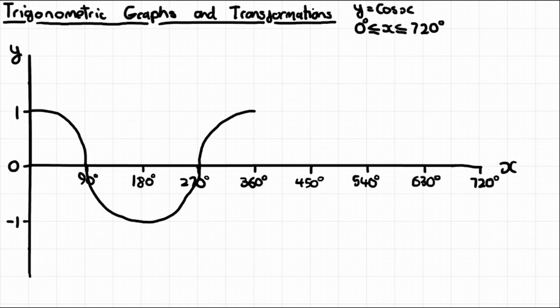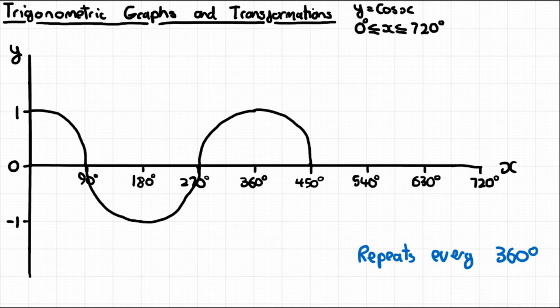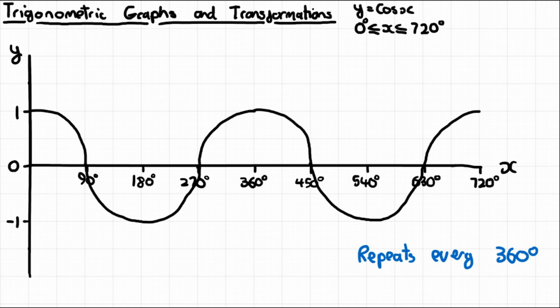Like the sin graph, the cos graph repeats every 360 degrees, which makes it easy to extend — you just need to remember the 0 to 360 portion and copy-paste. It goes down from 1 to 450, down to -1 at 540, back up to 0 at 630, and up to 1 at 720. When you expand it to this interval you can see it's actually just a sin graph shifted left by 90 degrees.